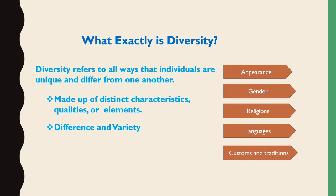Let's see the aspects of diversity. First is appearance — on an individual basis, we are different in look and appearance from one another. Second is gender — there are male and female members in society. All these different members follow different religions, speak different languages, and follow different customs and traditions.